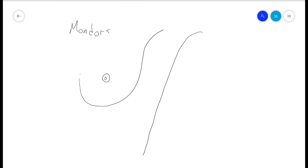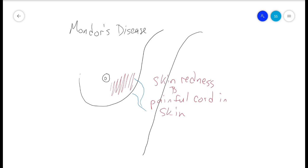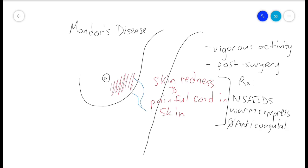Mondor's disease is superficial thrombophlebitis presenting as painful cords with some skin redness, usually in the lower outer breast and thorax. It can be caused by vigorous activity and sometimes after breast surgery. Treatment is with warm compresses and NSAIDs. There is no need for anticoagulation.